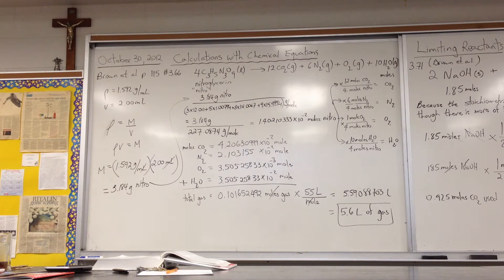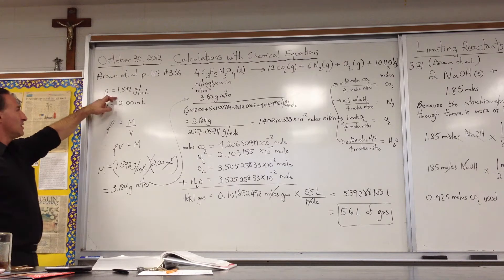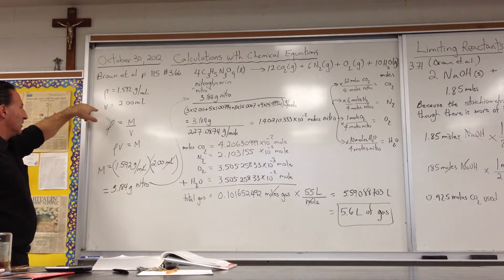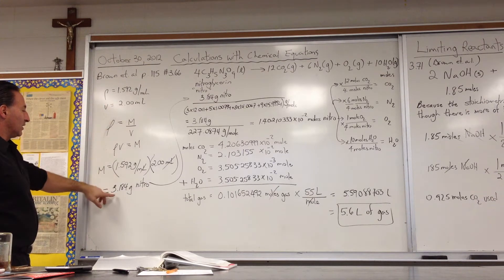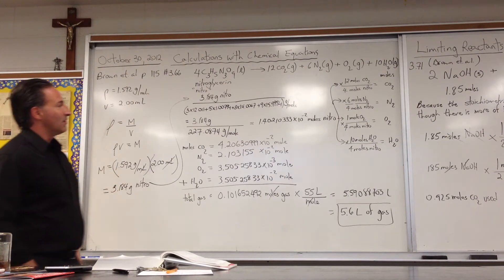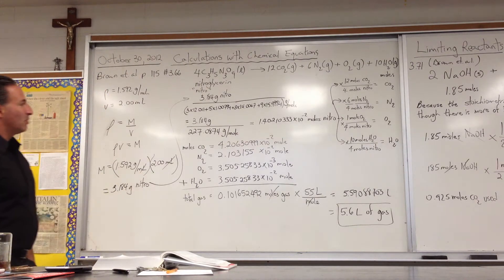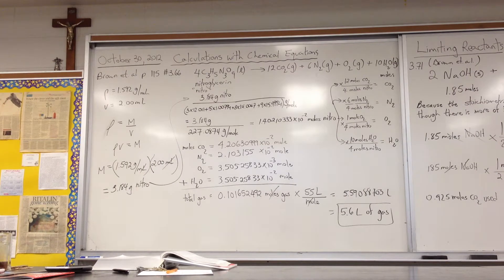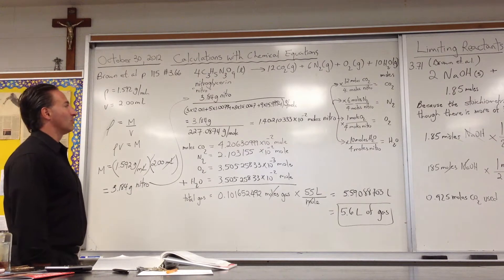And the question tells us, this is from our textbook, page 115, problem number 3.66. If 2 mLs of nitroglycerin is exploded, they give you the density, and so from there we calculate the grams of nitroglycerin. And they also tell us that every mole of gas occupies 55 liters of volume.